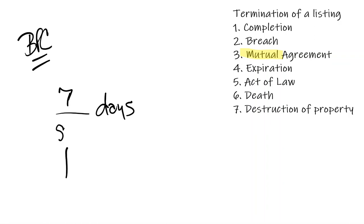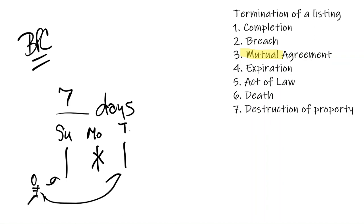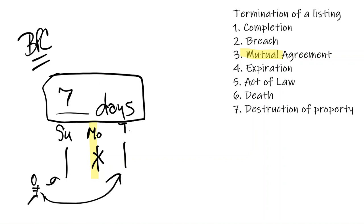Suppose Sunday you have an open house and a buyer comes in and says he wants to buy the listing and will come back with his wife. Monday your listing expires. Tuesday he comes back to your office and says he's ready to buy with cash and wants to close in three days. Under expiration your listing expired, but because of the broker protection clause covering seven days past the listing, anybody who would have been your client during the listing is also your client after.